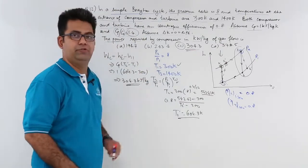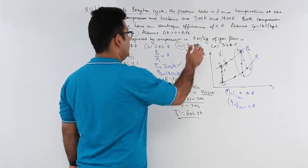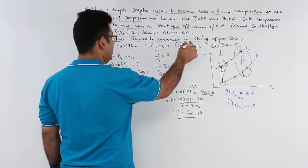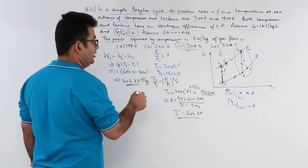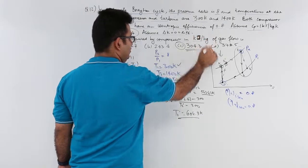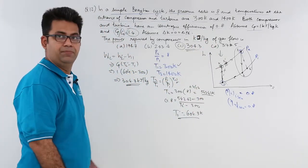And your answer is 304.3 kJ per kg. This is kJ per kg but this has to be kJ only, not kW. This is kJ per kg.